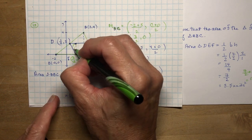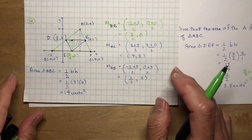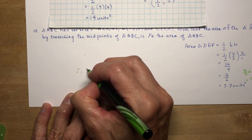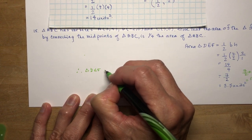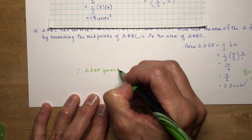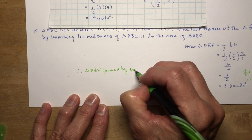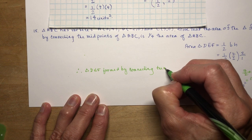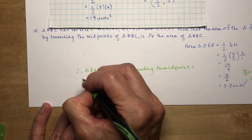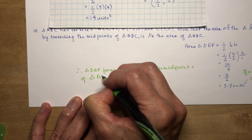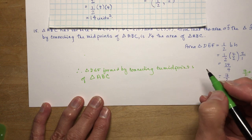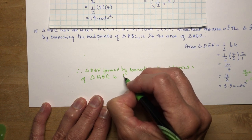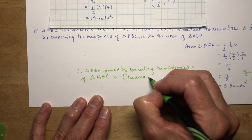Therefore, triangle DEF, formed by connecting the midpoints of triangle ABC, is one quarter the area of triangle ABC. Always make a nice concluding statement. Make your work neat, and whatever you do, don't use ink like I'm using.